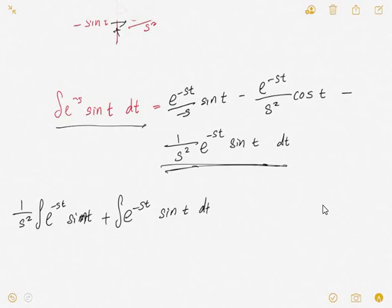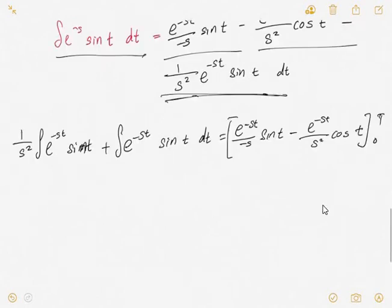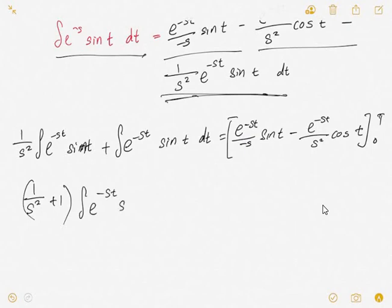After using the tabular method, the integral of e^(-st) sin(t) dt appears on both sides. You bring the right-hand side term to the left, collecting the integral. You then have (1 over s² + 1) times the integral of e^(-st) sin(t) dt equal to the boundary terms.